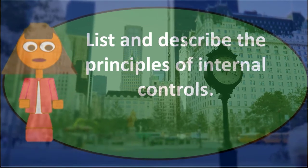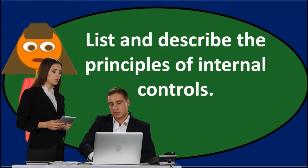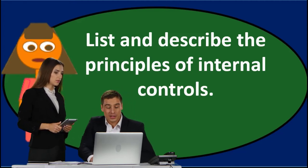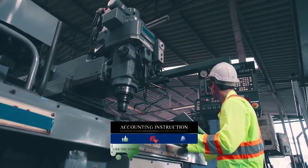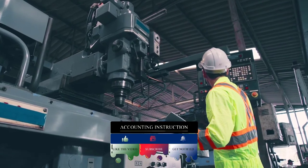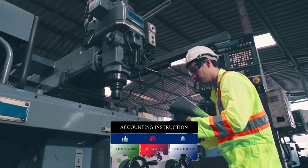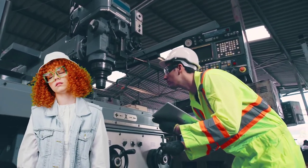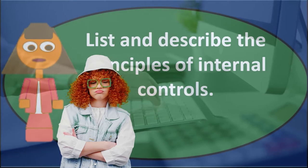A computer system can help us to reduce data input errors because it will automatically catch things — for example, if we record something that's not in balance, the computer system can help us pick that up. Note that computer systems have pros and cons: automating systems means there's no person running the system, and we do need to go back in to make sure we have the checks in the system to see that audit trail rather than just automating the process and not being able to go back and see what happened and how something was created.